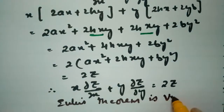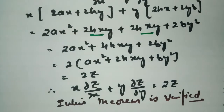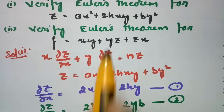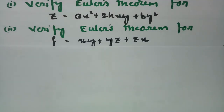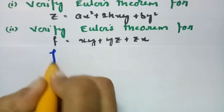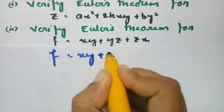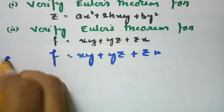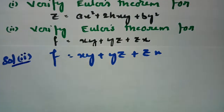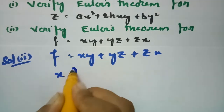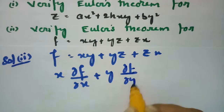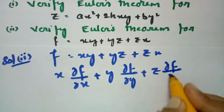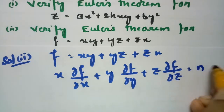Coming to the next equation, we have to verify Euler's theorem where f is given as xy plus yz plus zx. This is solution 2. For solution 2, according to Euler's theorem we verify that x into ∂f/∂x plus y into ∂f/∂y plus z into ∂f/∂z equals n into f.